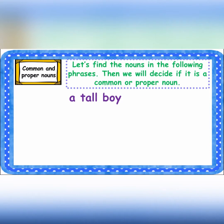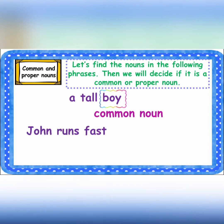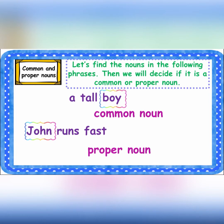It's a boy — 'boy' is a common noun, of course, because it's not specific. It could be any boy. Then 'John runs fast' — is this a common noun or a proper noun? It's a proper noun because it's specific. 'John' is a specific person, but 'boy' could be any boy. So in 'John runs fast,' 'John' is a proper noun.